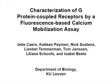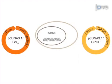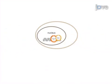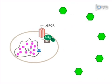The overall goal of the following experiment is to identify functionally activating ligands of orphan G protein-coupled receptors, or GPCRs. This is achieved by transiently transfecting a GPCR of interest and co-transfecting a promiscuous G alpha 16 construct in a cellular expression system to obtain temporary heterologous expression of both proteins.